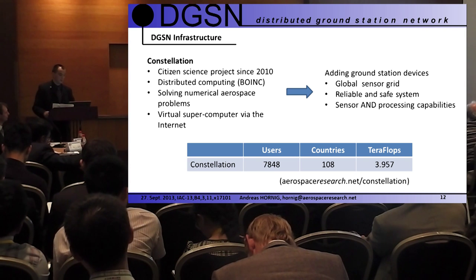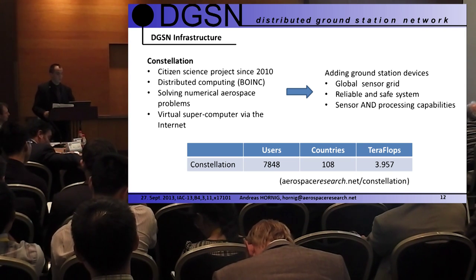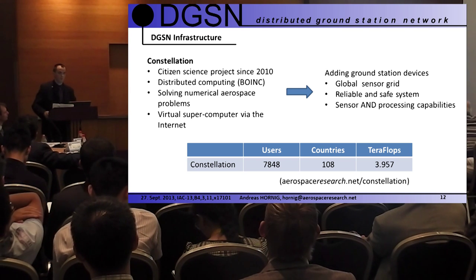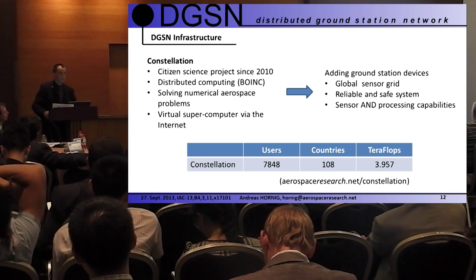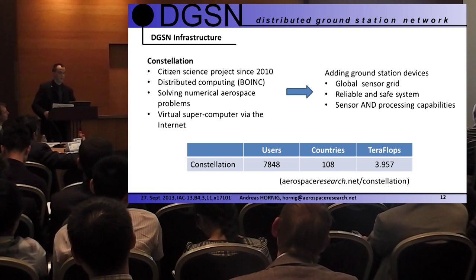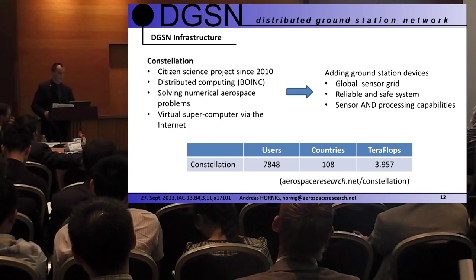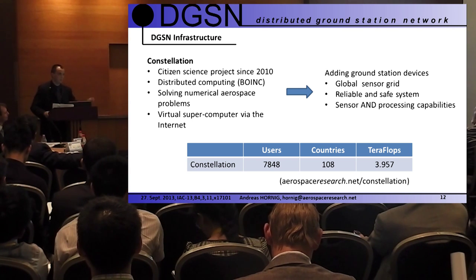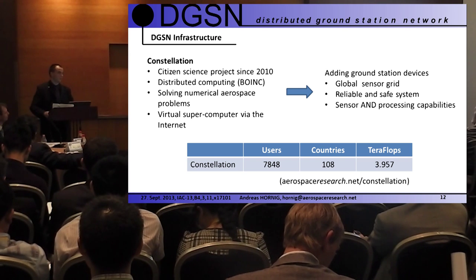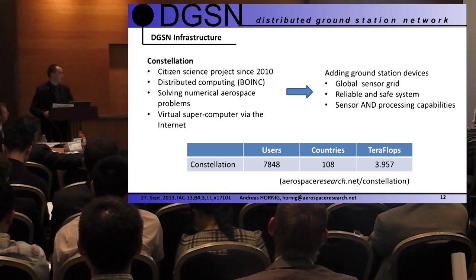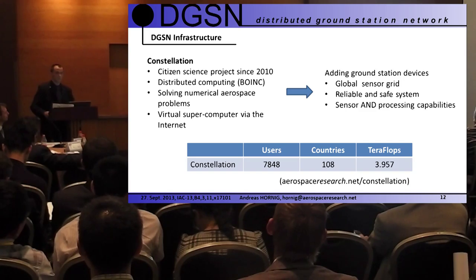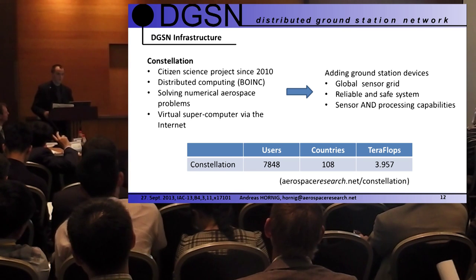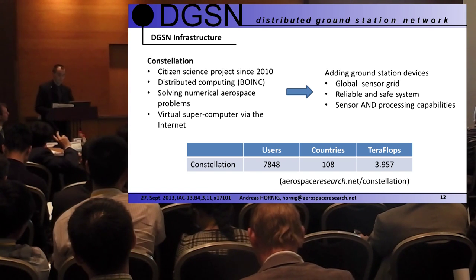The infrastructure is already there. Since 2010, we have a citizen science distributed computing platform using BOINC — similar to SETI@home — calculating and solving aerospace problems. We currently have 7,800 users worldwide with 2,300 active host PCs, so we don't need a quantum computer for our purposes. If you persuade just 10% of them to buy the hardware, plug it into their PC, and put an antenna on their balcony, that gives more than the needed 365 users across 108 countries. Users are already running 24/7 because they earn credits and participate in team competitions.